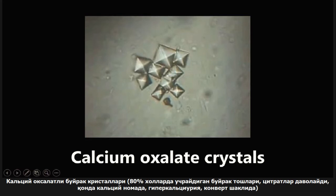Patients are normocalcemic — they have a normal level of calcium in the blood — but they are hypercalciuric, with increased calcium in the urine. That's what causes saturation and formation of these calcium oxalate crystals. In several textbooks, they're described as envelope-shaped or dumbbell-shaped, so if you see that, think calcium oxalate crystals.